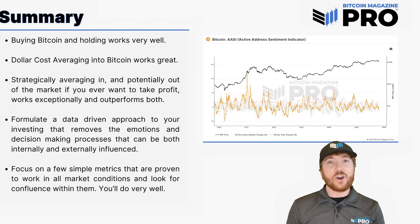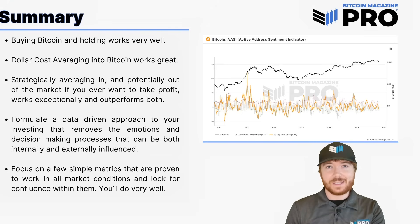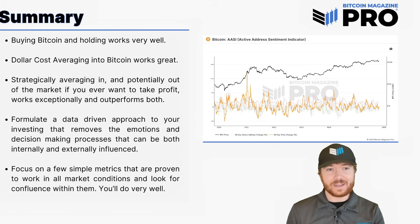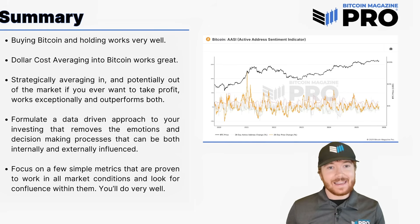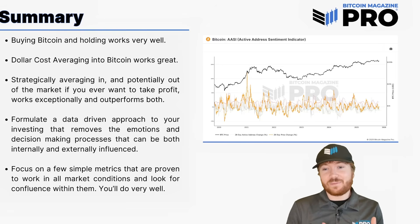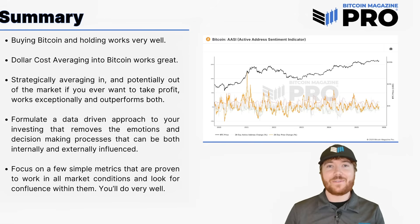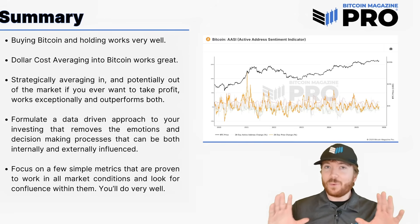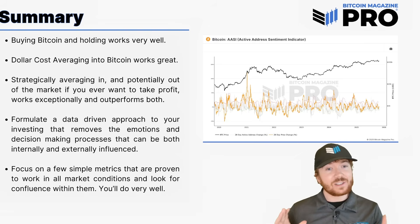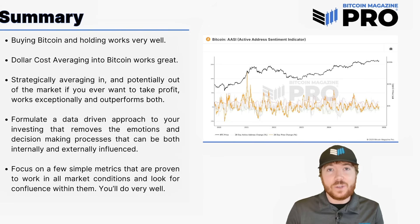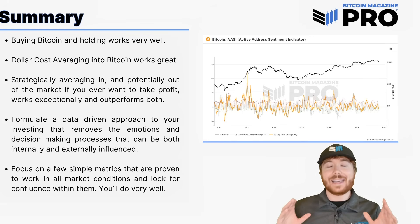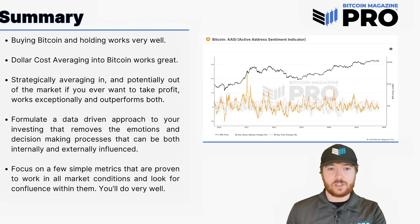To summarize: buying Bitcoin and holding does incredibly well — over 98% of Bitcoin's entire history, if you bought and held you'd be in profit. Dollar cost averaging into Bitcoin over the past eight years has actually provided even more profit and removes the stress of having to bulk buy. But strategically dollar cost averaging into — and potentially out of — the market has worked exceptionally well and outperformed both buy and hold and blind dollar cost averaging.